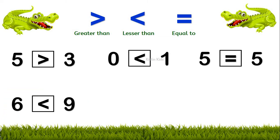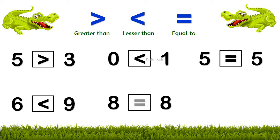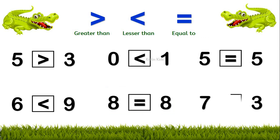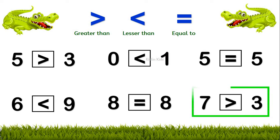In the next example, we have 8 and 8 — which sign will we use? We will use the equals to sign: 8 equals 8. Here is one more example: 7 and 3. Here we will use the greater than sign — 7 is greater than 3. And 7 and 4.